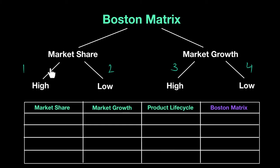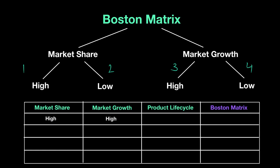Looking at market share and market growth together, you get four combinations: high market share with high market growth; high market share with low market growth; low market share with high market growth; and finally, low market share with low market growth. These four combinations form the basis of the Boston Matrix.